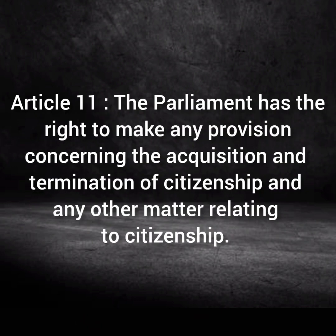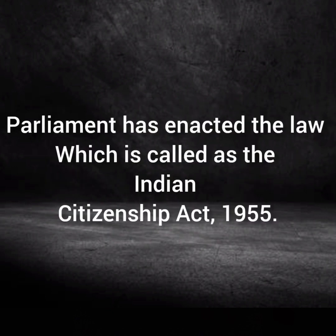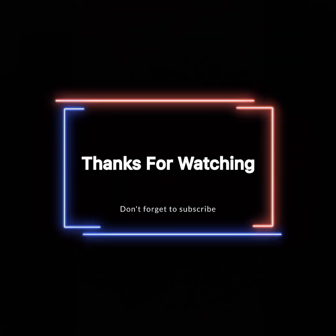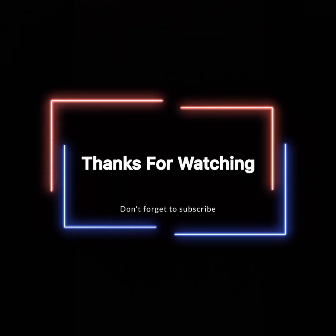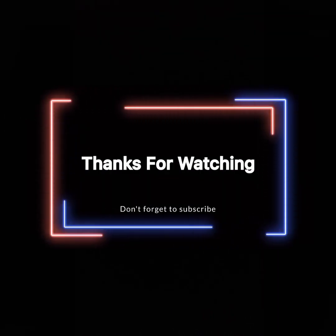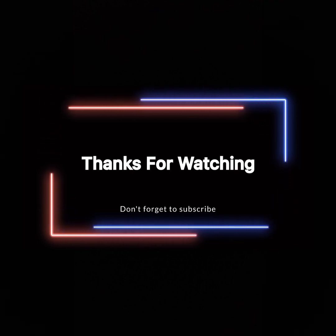Article 11 says that Parliament has the power or right to determine the acquisition or termination of citizenship. Parliament has the power to make laws related to citizenship, and in exercise of this power, Parliament enacted a law which is called the Citizenship Act of 1955. That's all for today. In the next video, we will see how a person can acquire citizenship of India. Thanks.